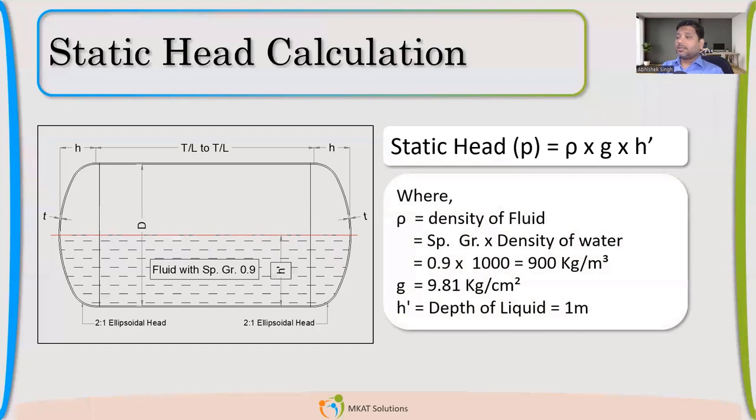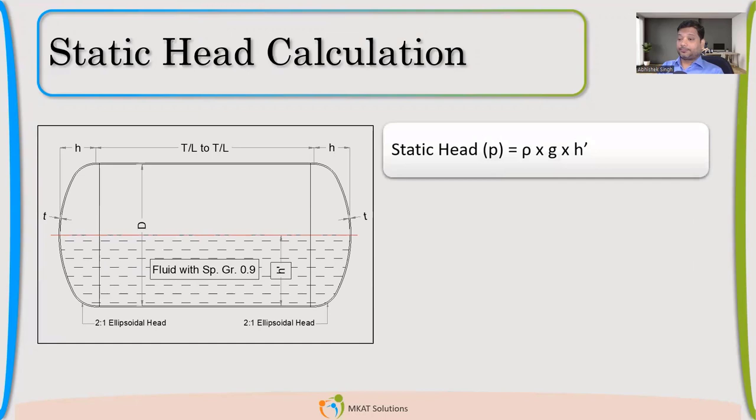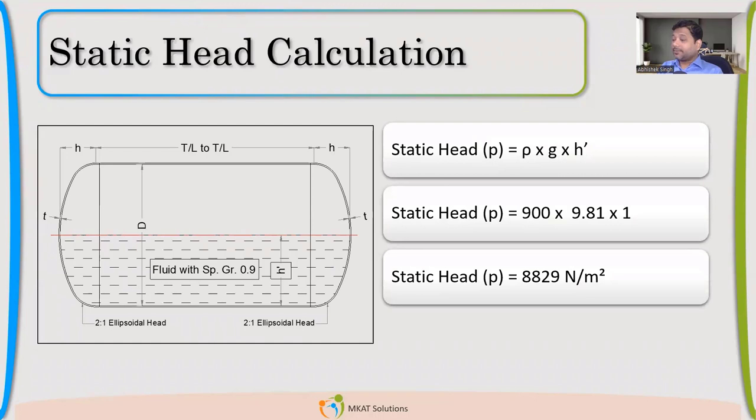It's simple calculation, rho GH. So rho is the density of that liquid, G 9.81 gravitational acceleration, and the height. So if I use that, I'll get the static head as 8829 Newton per meter square. What is that? What is Newton per meter square? We generally never write pressure in terms of Newton per meter, specifically in design.